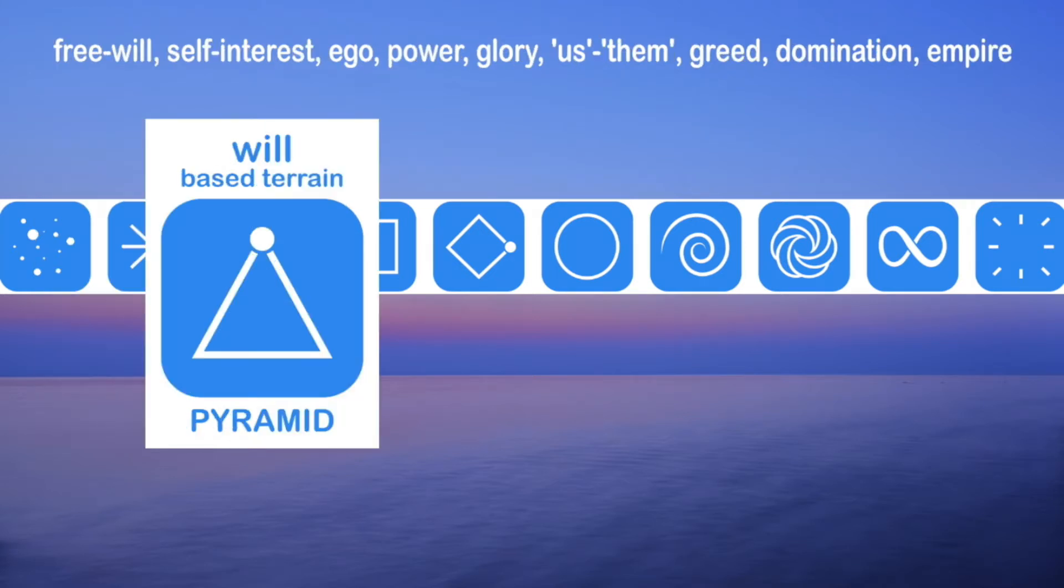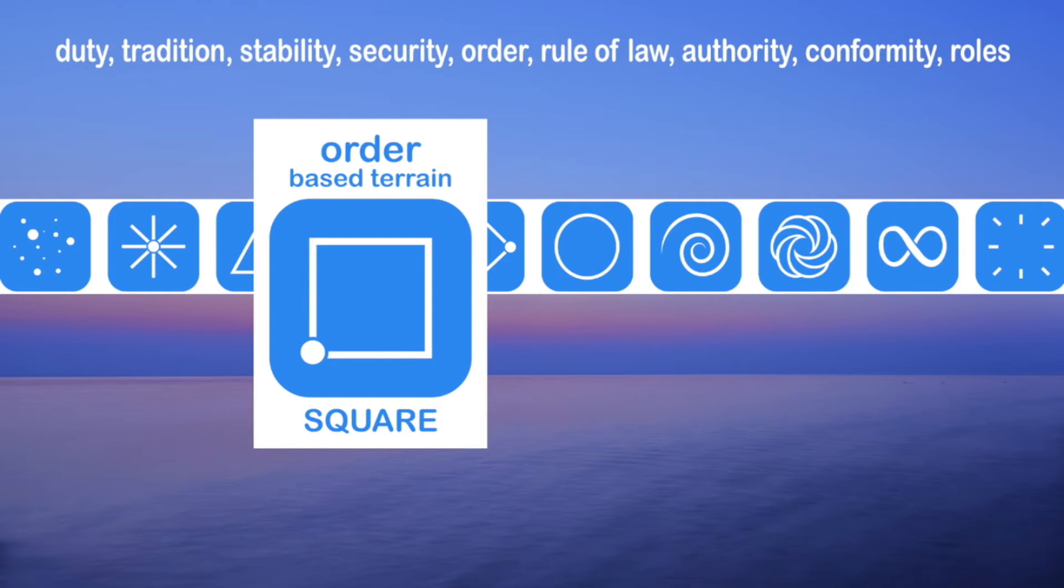Then the will-based terrain pyramid. These are people who think they need to accumulate wealth and power in order to keep themselves safe. And then we've got the order-based terrain square where people really believe that the system will keep them safe and they're buying into the consensus reality and believing in authority and trying to contribute to society.